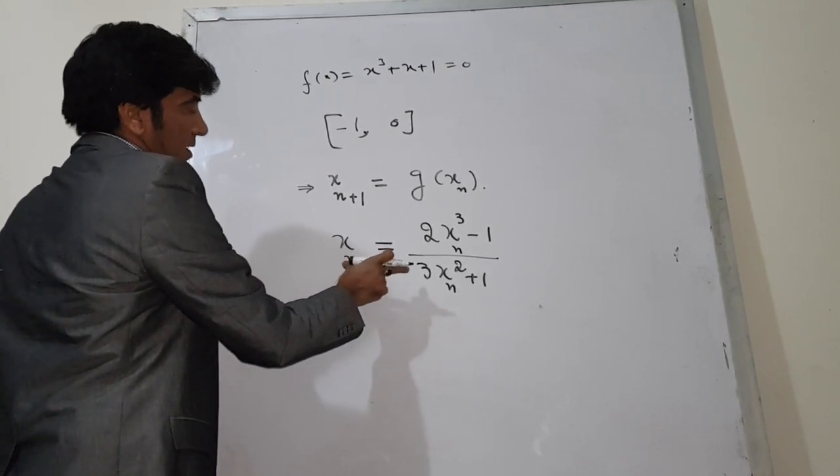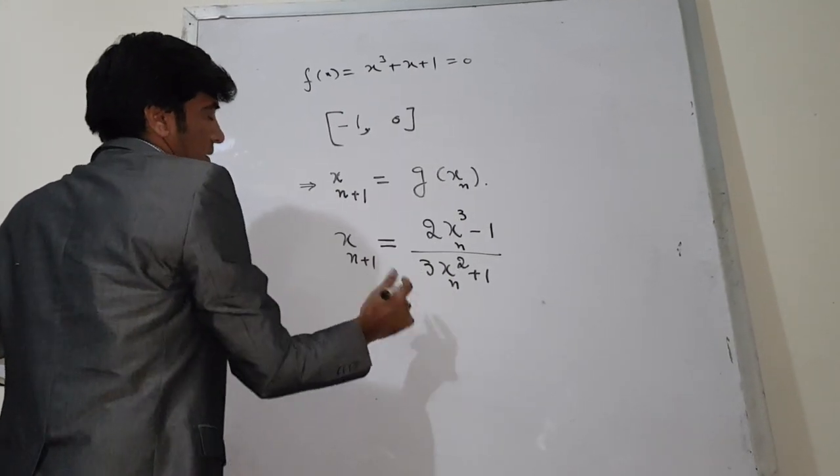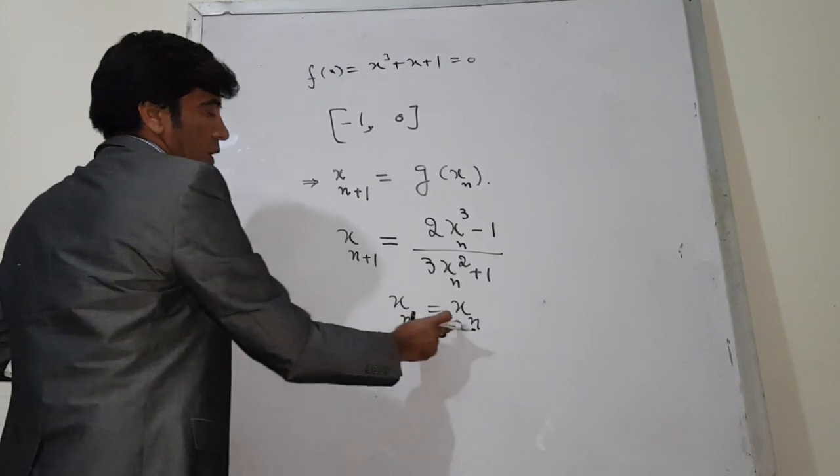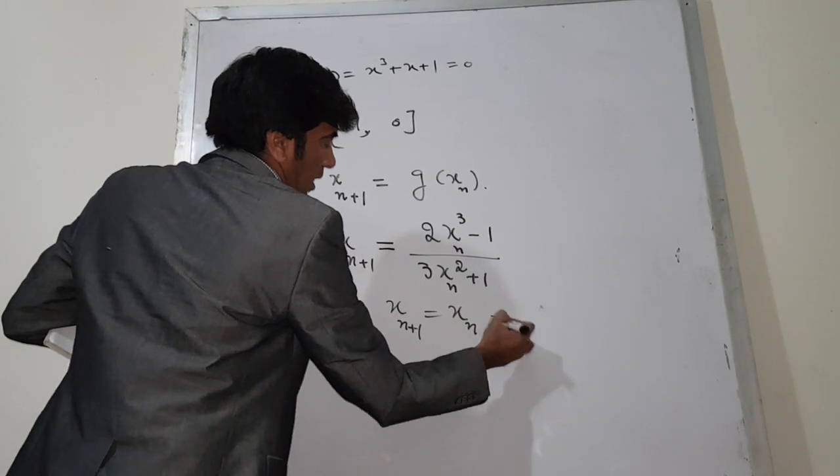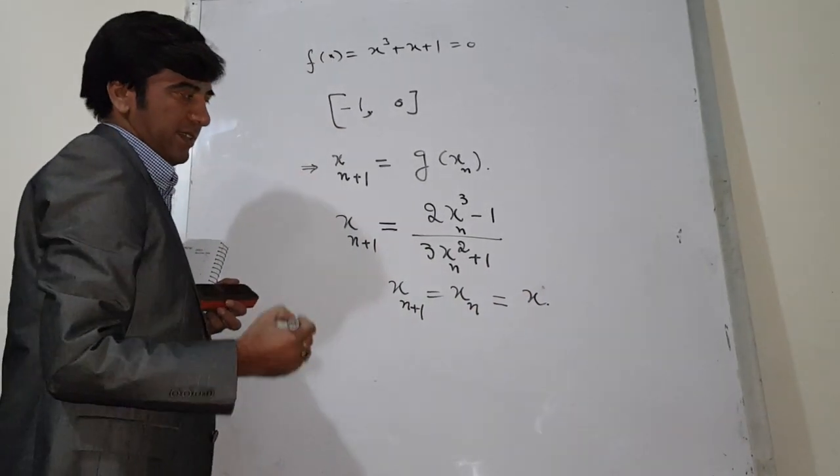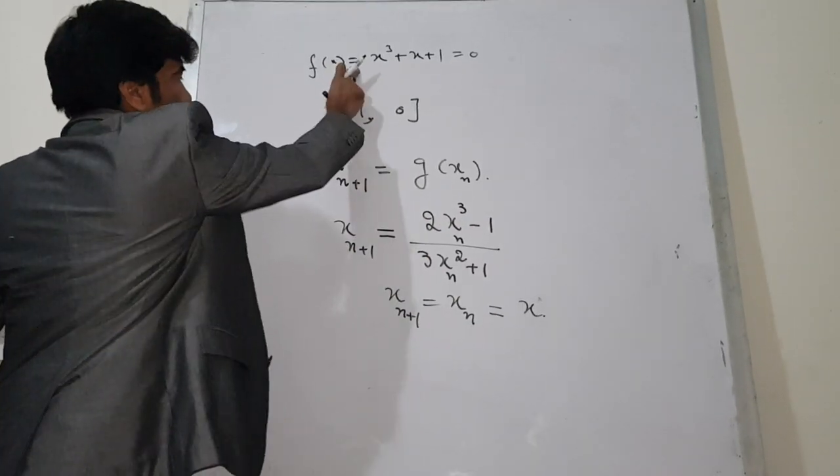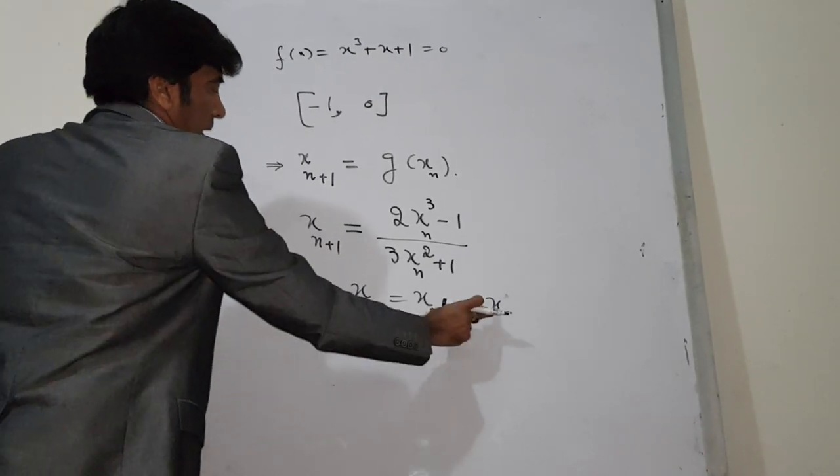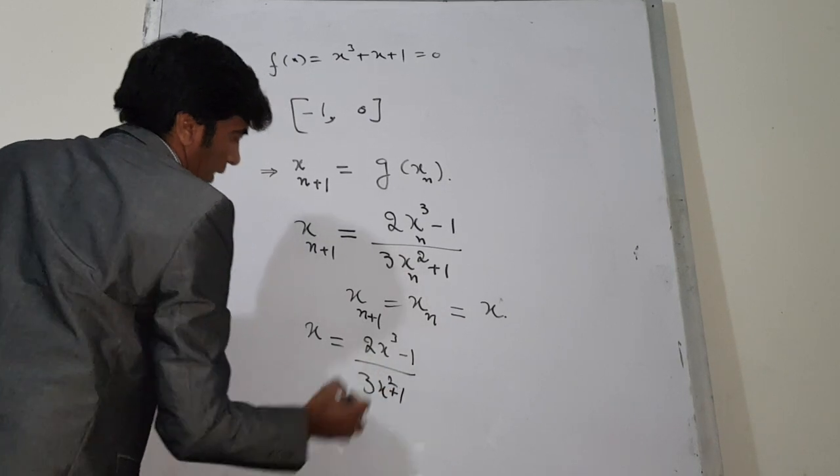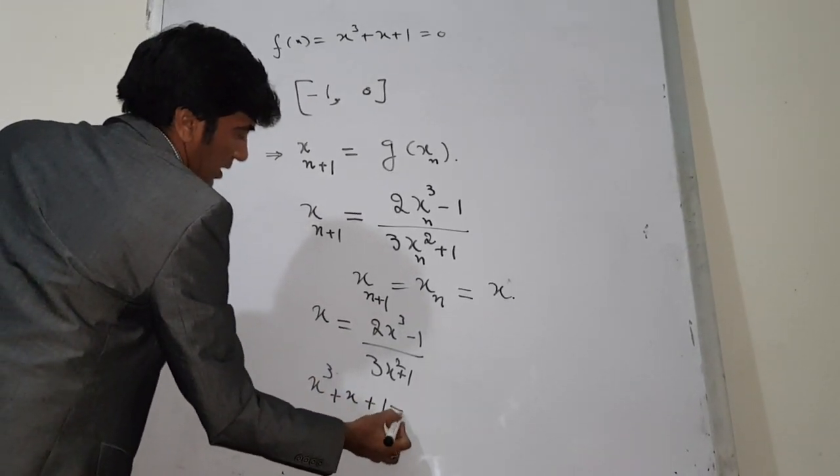Always remember, whenever this equation converges to this one, it means that x_{n+1} and x_n become equal, because these are two successive approximations. According to the question, according to the requirement, they both have the same answer, let's say that is x. So whenever it is asked if the given iterative equation converges to the above equation, just replace this equation by x: x = (2x³ - 1)/(3x² + 1). Then you simplify it.